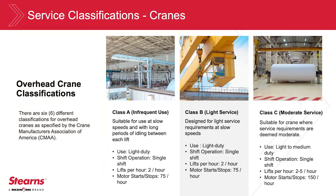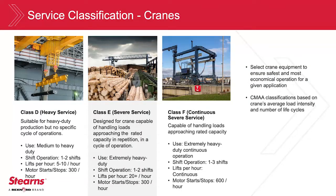Class B is for light service use. The typical workload varies from no load to occasional full rated loads, with applications including repair shops, light assembly operations, and light warehousing. Class C is for moderate service load levels — the workday can include an average of 50% of rated load, with applications in machine shops, paper mills, and machine rooms. Class D is for heavy service use, where average loads approaching 50% are continuously handled, found in foundries, fabricating plants, steel warehouses, and lumberyards.